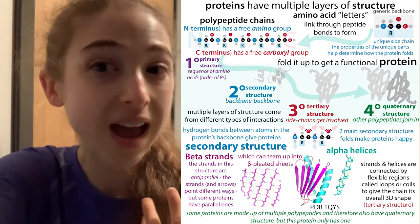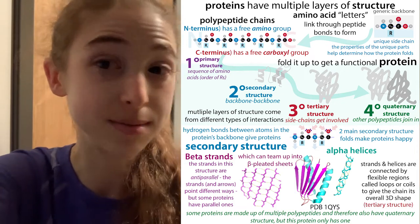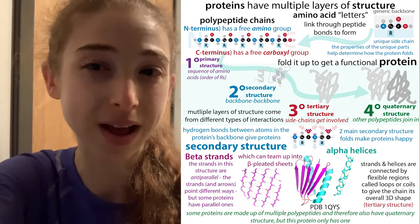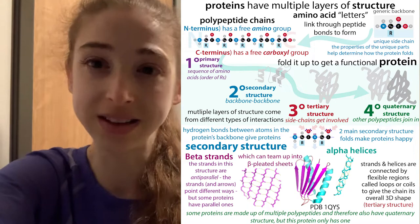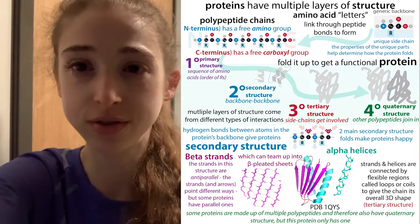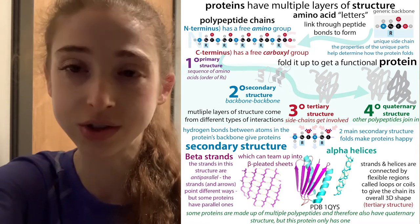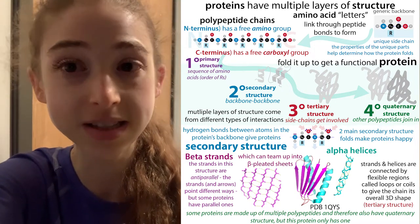Additionally, alanine wins the award for most likely to form an alpha helix, and we'll talk more about how alanine's structure contributes to the structure of proteins.